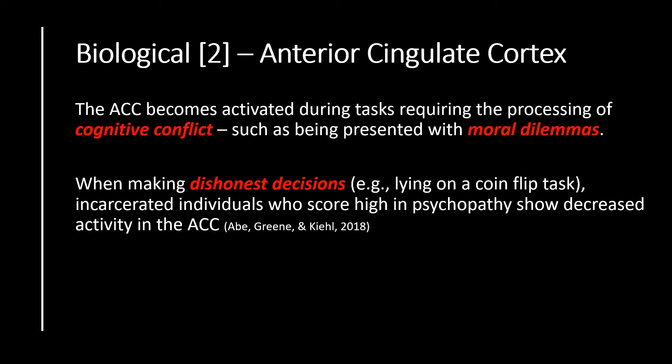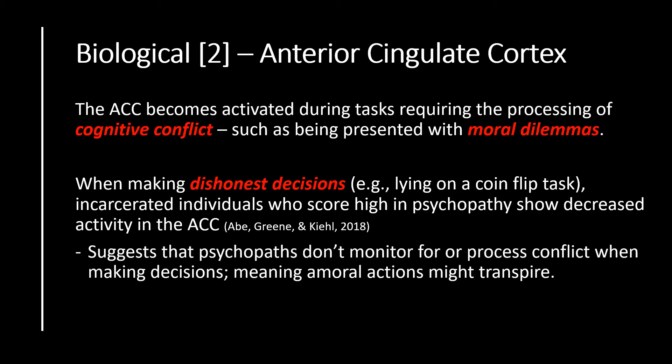From the work of Abe, Green and Kiehl in 2018, they note that when making dishonest decisions — such as deciding whether or not to lie on the result of a coin flip task — incarcerated individuals who score higher in psychopathy show decreased activity in the anterior cingulate cortex, meaning they weren't processing this information as much as those with lower levels of psychopathy. This suggests that psychopaths don't monitor for or process conflict when making decisions, and as such amoral actions might transpire as a result.